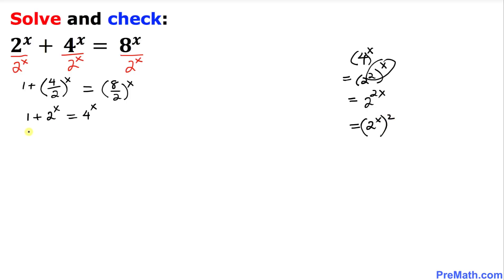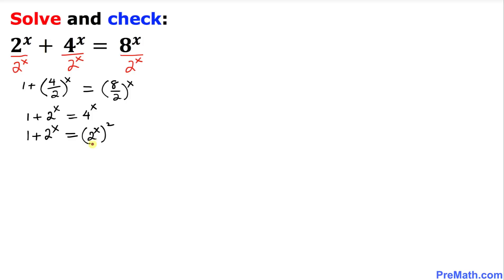So our equation is going to become on the left hand side 1 plus 2 power x, equals to — here I am going to replace this one by 2 power x and then power 2. Now if we focus on this equation we can see that we have 2 power x on both sides, so we are going to use our substitution method. I am going to let u equal to 2 power x, so then our equation is going to become 1 plus u equals to u squared.